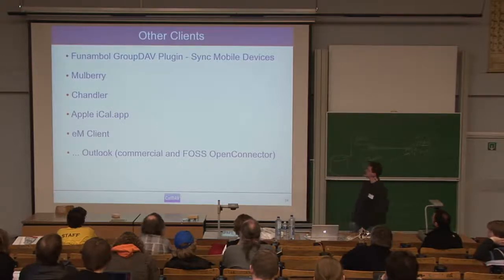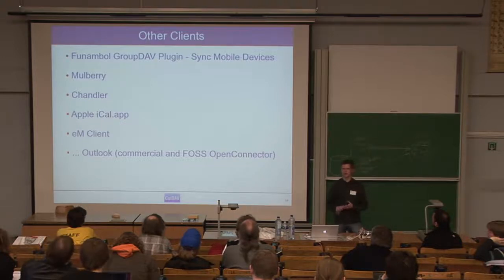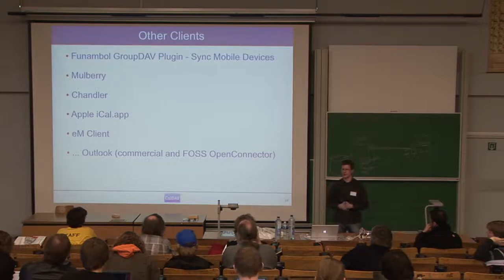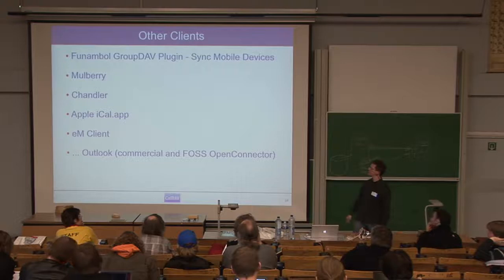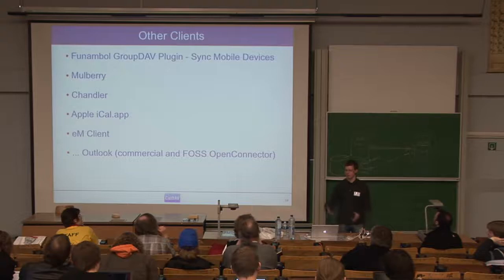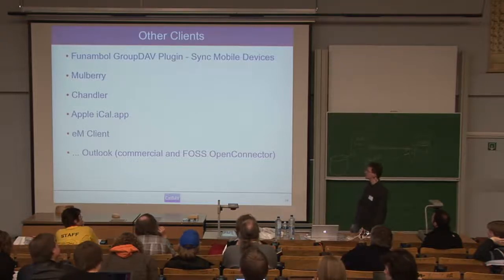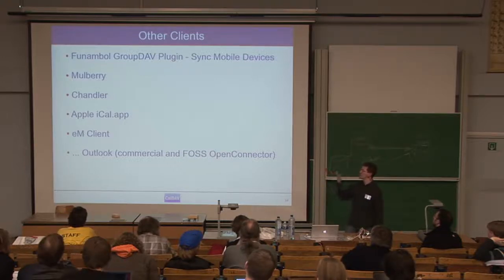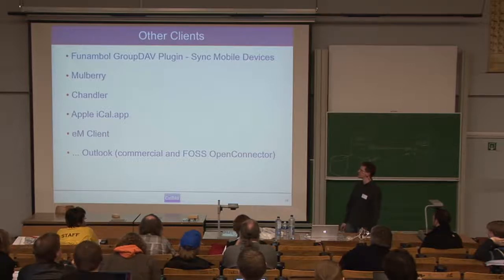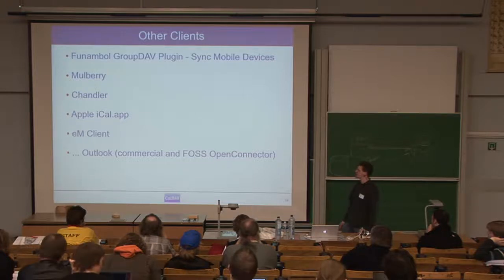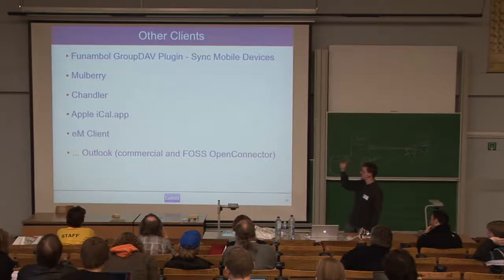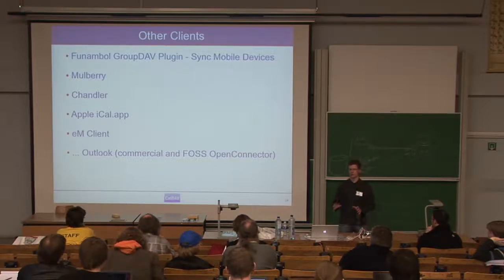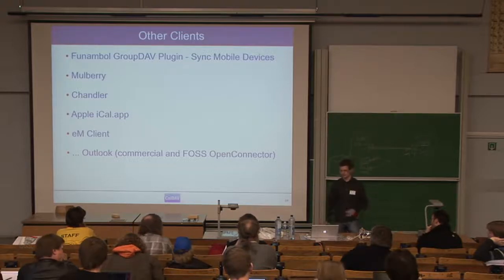Other clients include the Funambol GroupDev plugin — Funambol is a Java synchronization server that can synchronize WebDAV servers with mobile devices, and there's a GroupDev plugin which can synchronize a GroupDev backend with any mobile device supported by Funambol. There's also Mulberry, which is a pretty powerful CalDAV and IMAP client though I don't like the user interface. There's Chandler by the Open Source Applications Foundation, which is also based on WebDAV. There's iCal from Apple, EM Client, and Outlook. There's even an open source project called Open Connector which implements the CalDAV protocol, though it's not very fast, so if you're a Windows developer they need a lot of help.